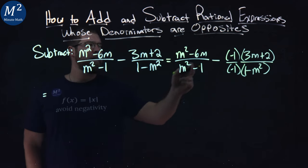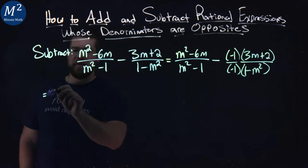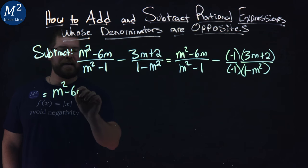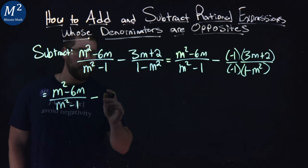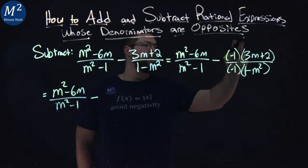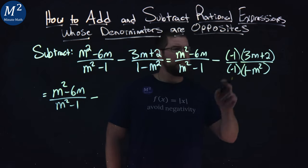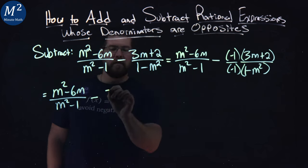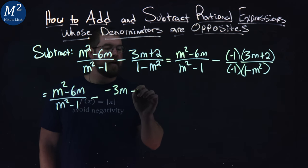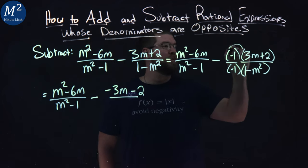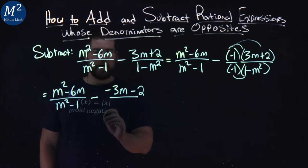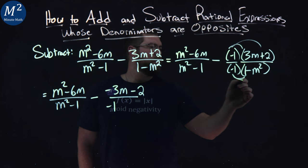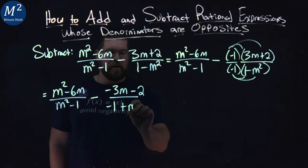Now what happens with that? Again, left-hand side stays the same, m squared minus 6m over m squared minus 1. What happens with the second one? We distribute the minus sign to each part here. We have minus 3m minus 2, don't forget it distributes to both parts. Same thing here, minus 1 times 1 is minus 1, minus 1 times minus m squared is plus m squared.